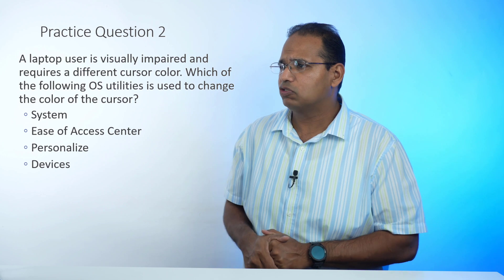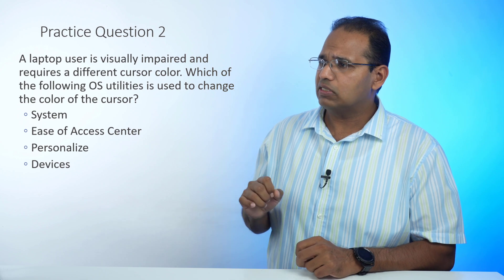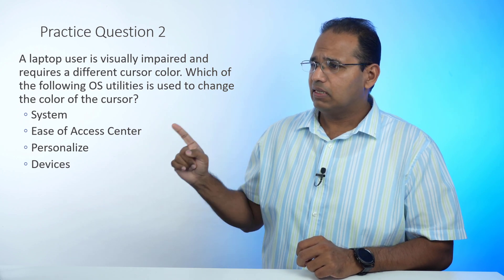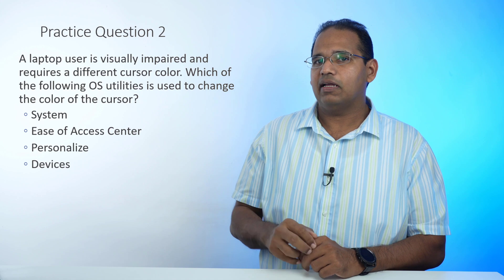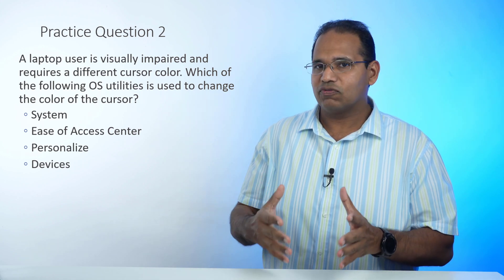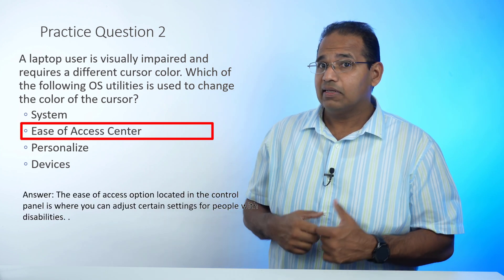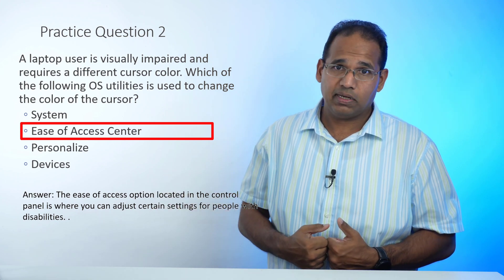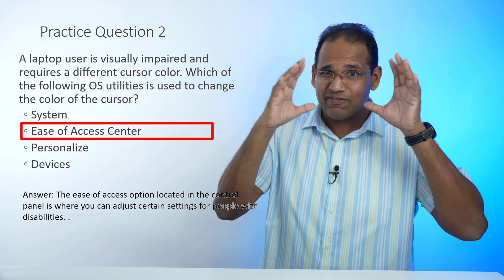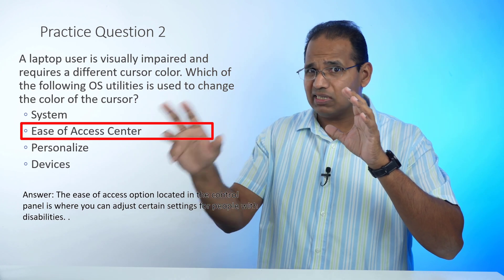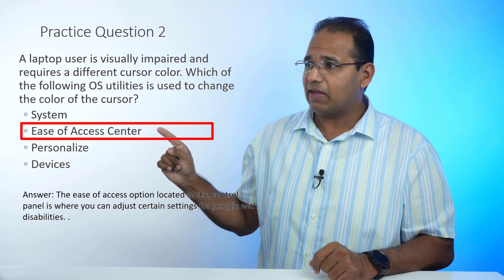Practice question number two: A laptop user is visually impaired and requires a different cursor color. Which of the following OS utilities is used to change the color of the cursor? The options are System, Ease of Access Center, Personalize, or Devices. If you go into the control panel and want to adjust visual or accessibility settings for people with disabilities, you would go to the Ease of Access Center, which is found in control panel.